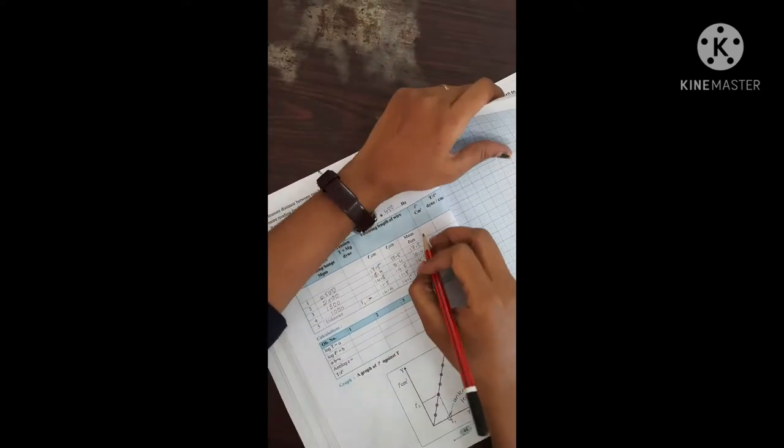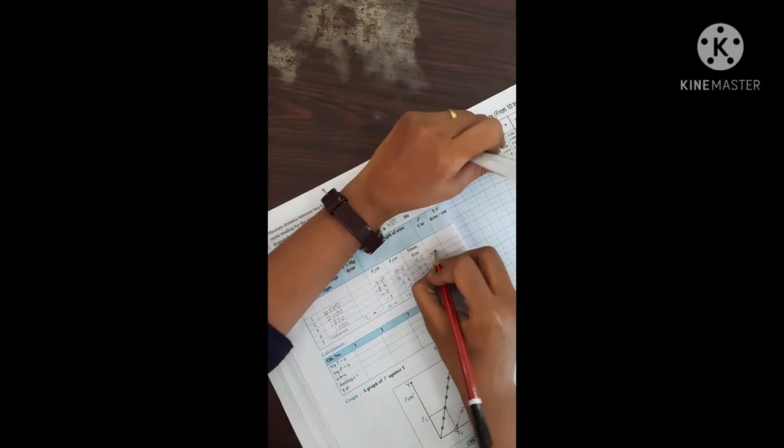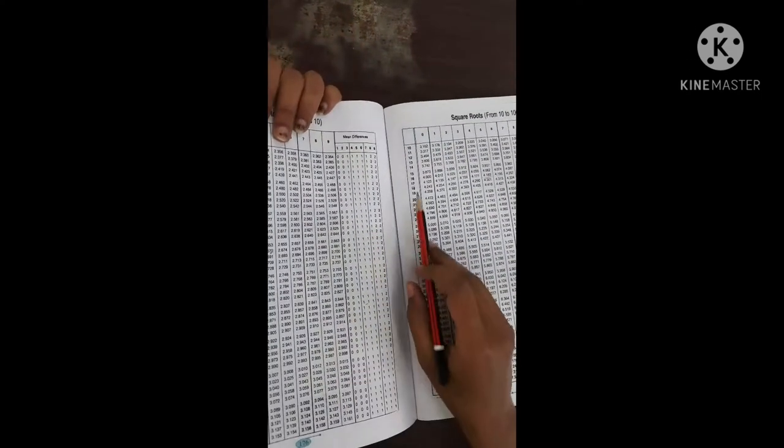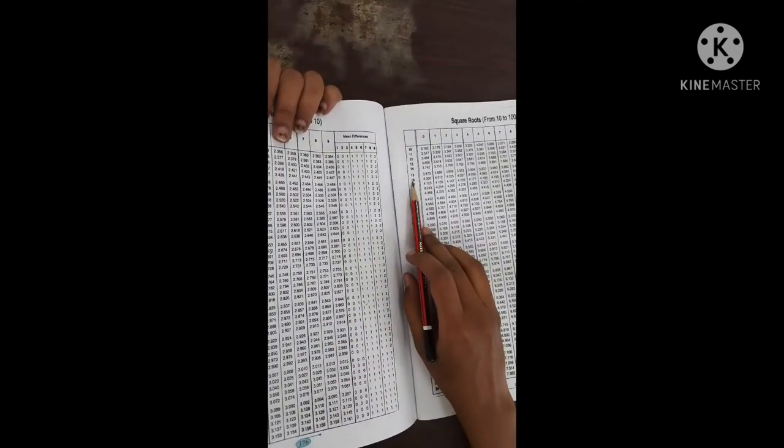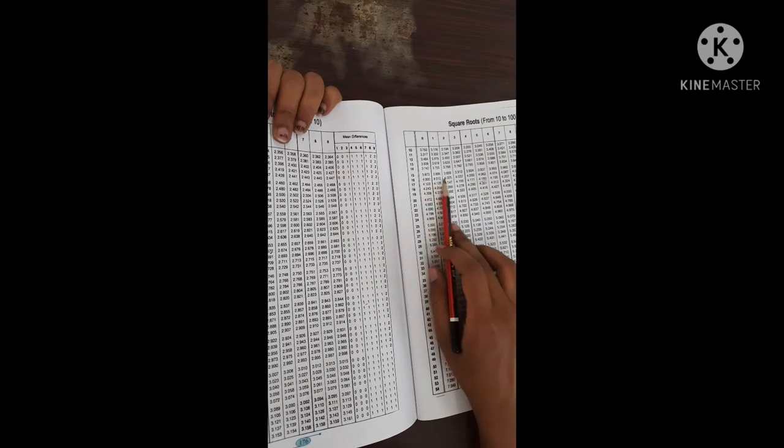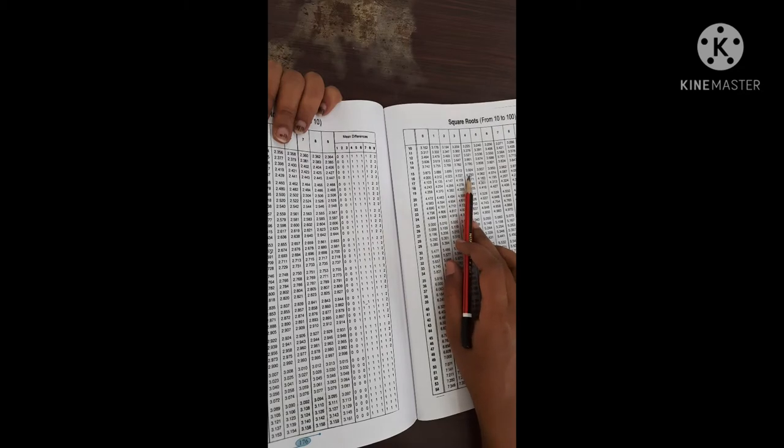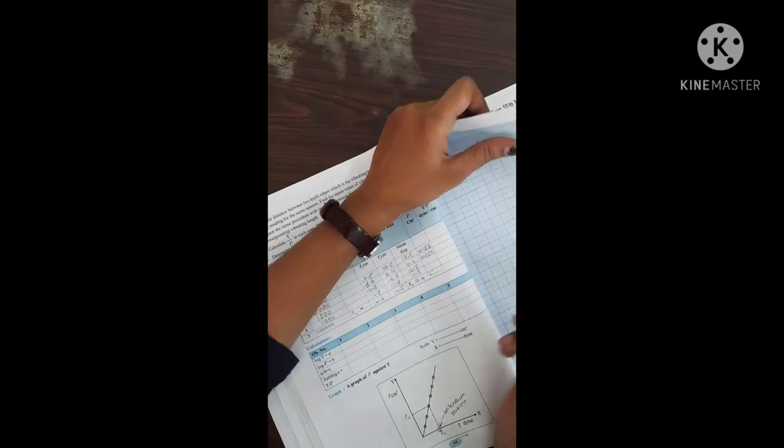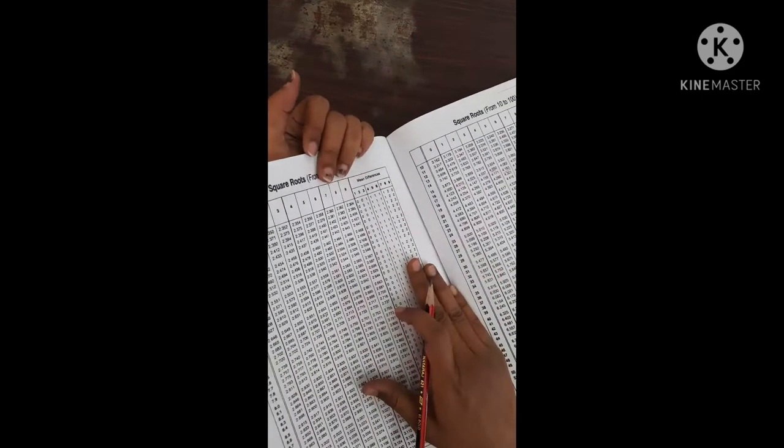Then 16.4. So 16.4, 16 and 0.4, matlab ye fourth line mein aapko dekhna hai. So 16 and this is the fourth, 4.050. If you know how to use the log table book, then it is so easy for calculation.